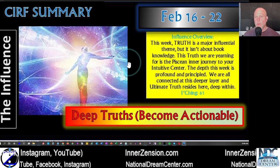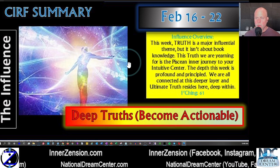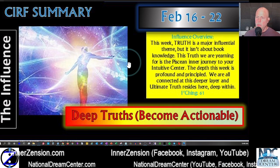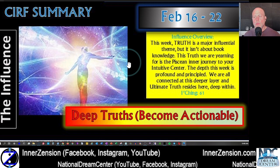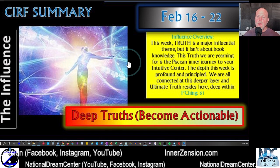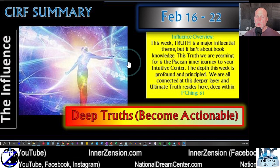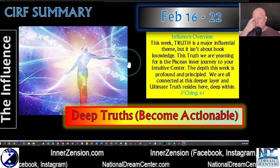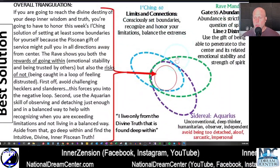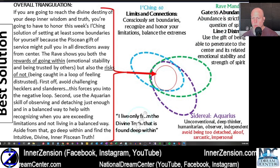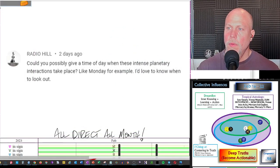And here is the summary for the influence. And I need to go over to nine. Nine is my shortcut by the way. All right. The influence overview this week. Truth is a major influential theme. That's Mercury exalted mainly, but also Pisces inward truth. It isn't about book knowledge. This truth we are yearning is for the Piscean energy, inner journey to your intuitive center. The depth this week is profound and principled. We are all connected at this deeper layer and ultimate truth. And ultimate truth resides here, deep within. And again, deep truths become actionable.